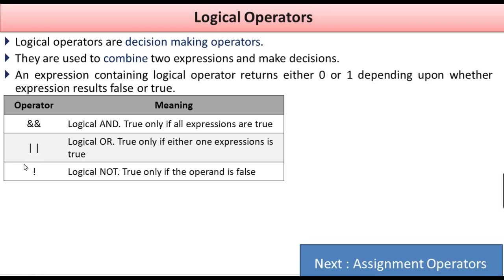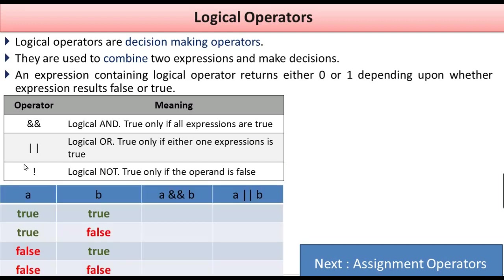Logical NOT: the logical NOT reverses the statement's result. For example, if a statement produces an output of true, it will return false. And if the demo is false, it will generate a true result. Let's see with an example.